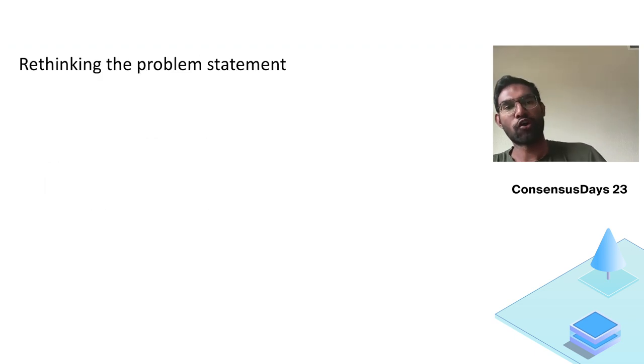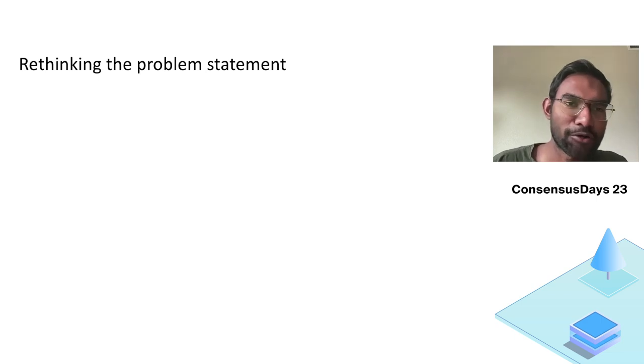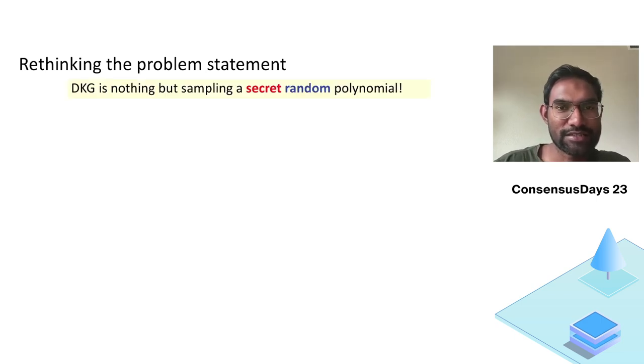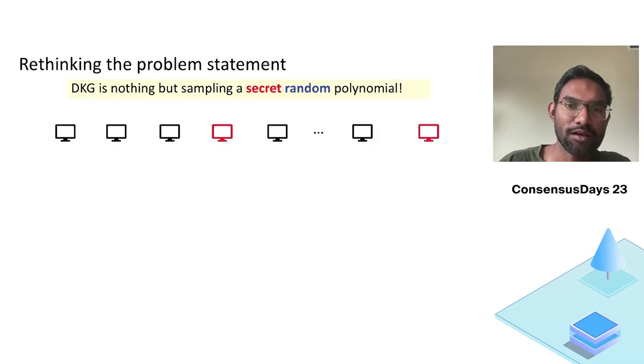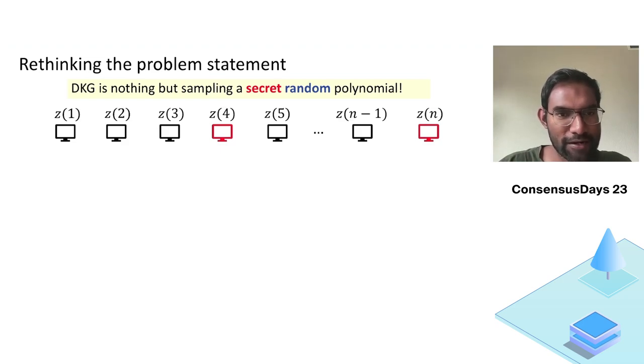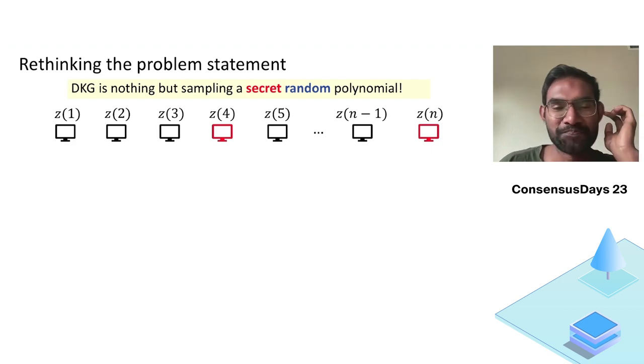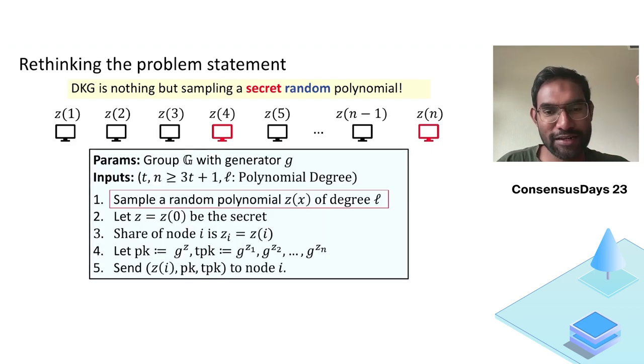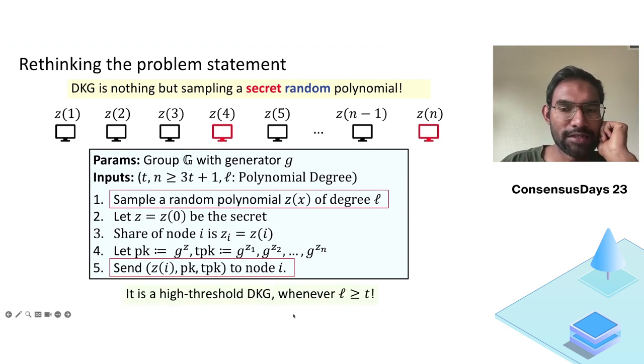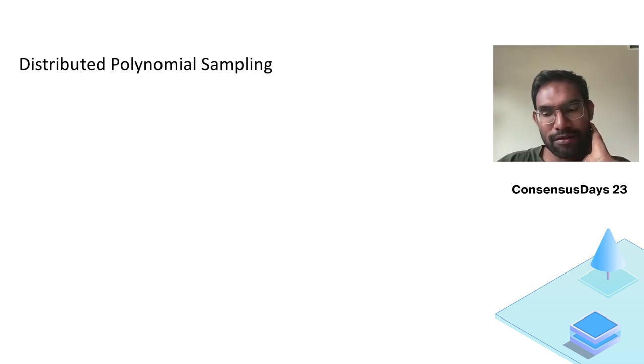So what's our approach? Our approach is very simple. We just rethink the problem statement. So what's DKG? DKG is nothing but sampling a secret random polynomial. There's a bunch of nodes and we want to sample a random polynomial which is secret, such that each party gets only one evaluation point on this polynomial. So DKG, the problem statement says nothing about using this general framework. If you look at the ideal functionality, that's exactly what's happening. It's sampling a random polynomial and giving one evaluation point and some common info to every party. It's high threshold whenever the degree is larger than or equal to t. So I make it equal for simplicity.